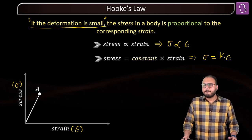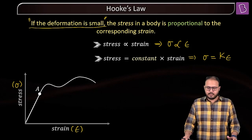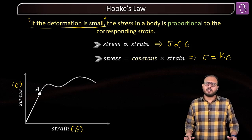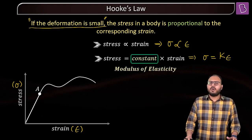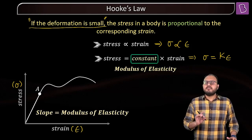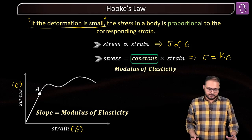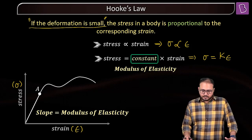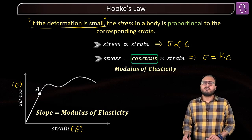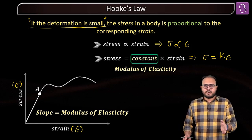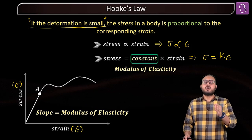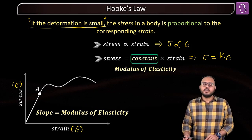What happens after that? Something like this — but what is the criteria for drawing this curve? I will give you an analogy because analogy works best, and then I leave it to you to study it in detail. But before that, this constant has a name: it is called modulus of elasticity. Stress equal to a constant times strain — this constant is called modulus of elasticity.